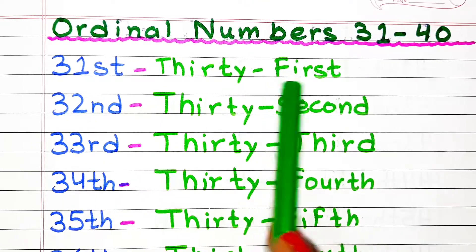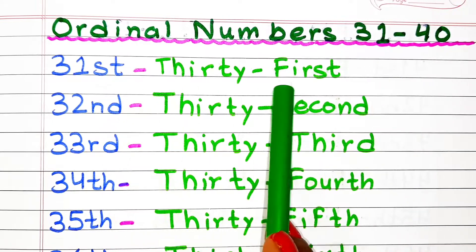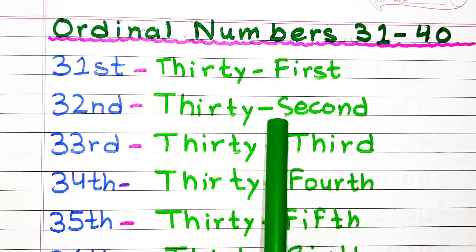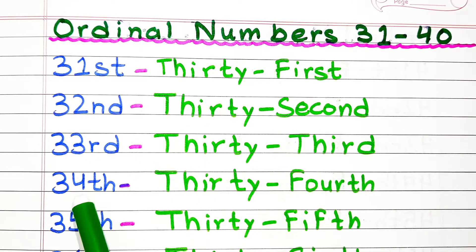Ordinal numbers from 31 to 40. Thirty-first, thirty-second, thirty-third, thirty-fourth.